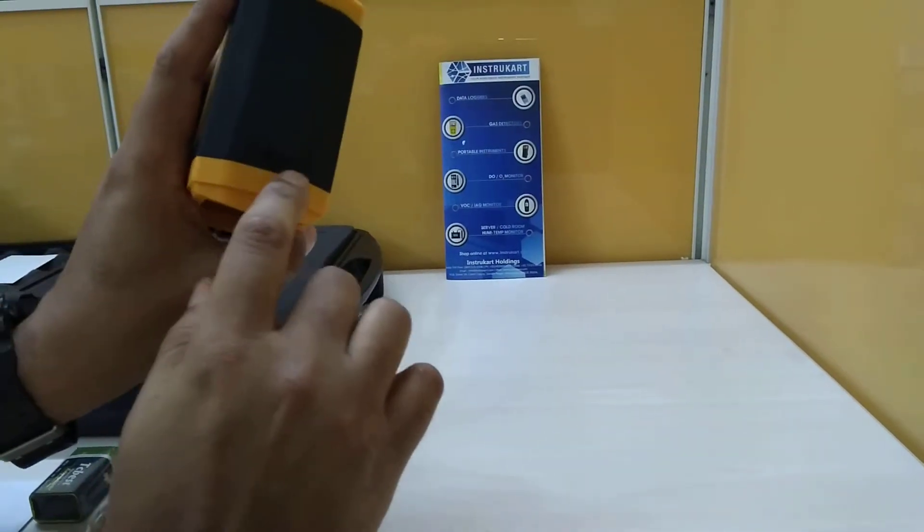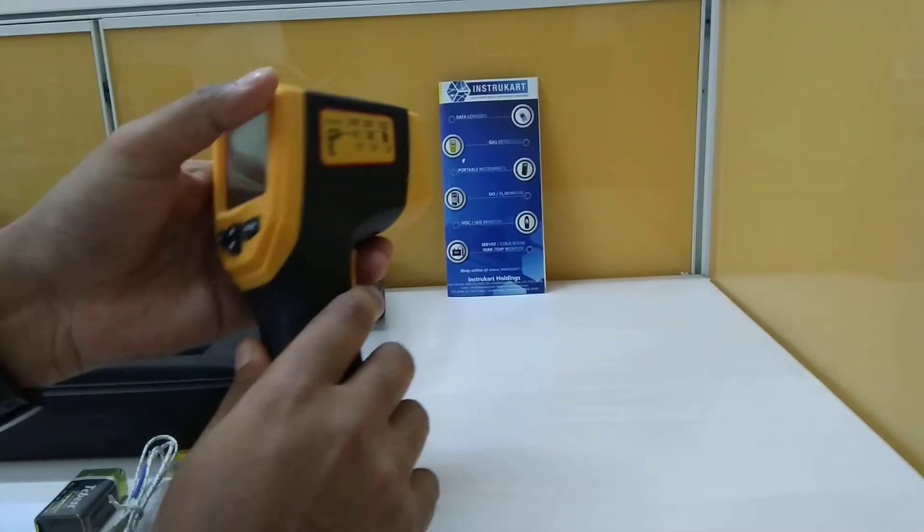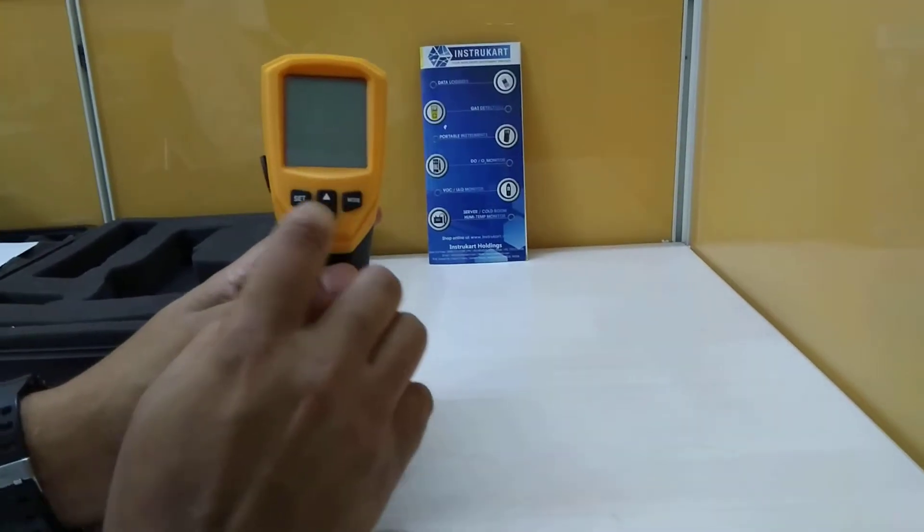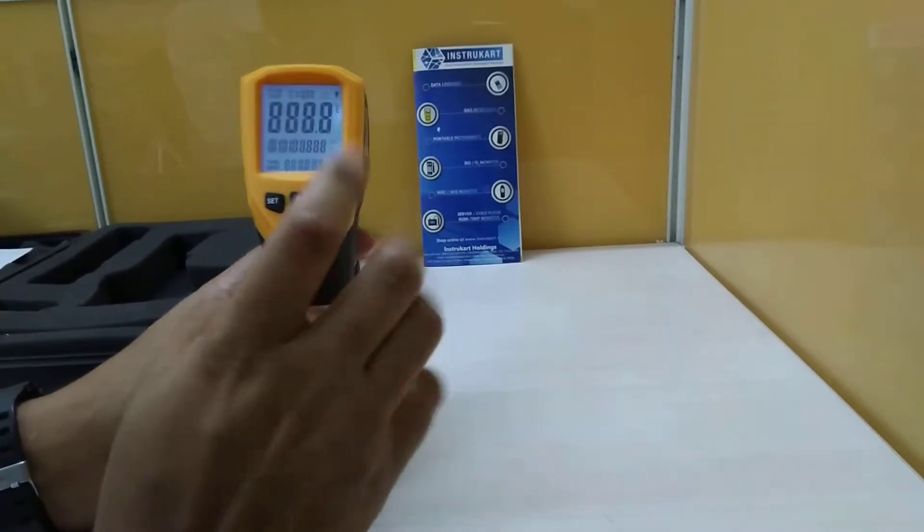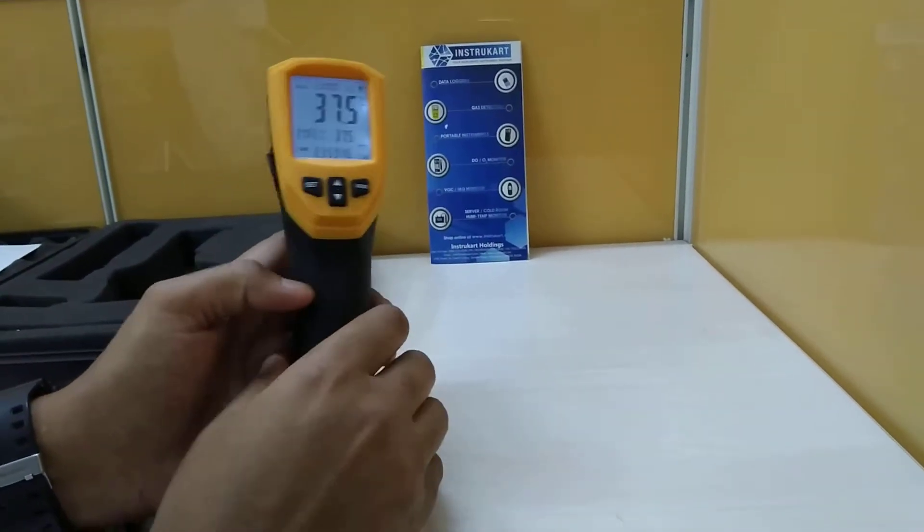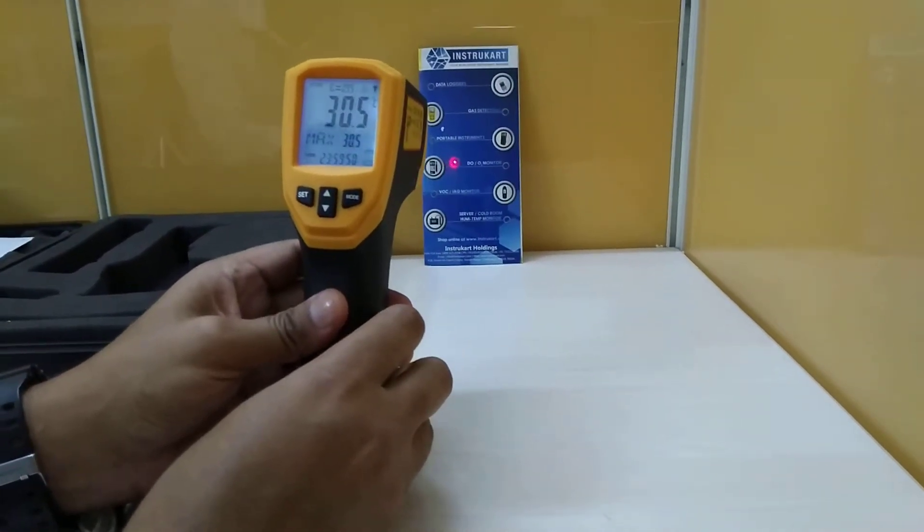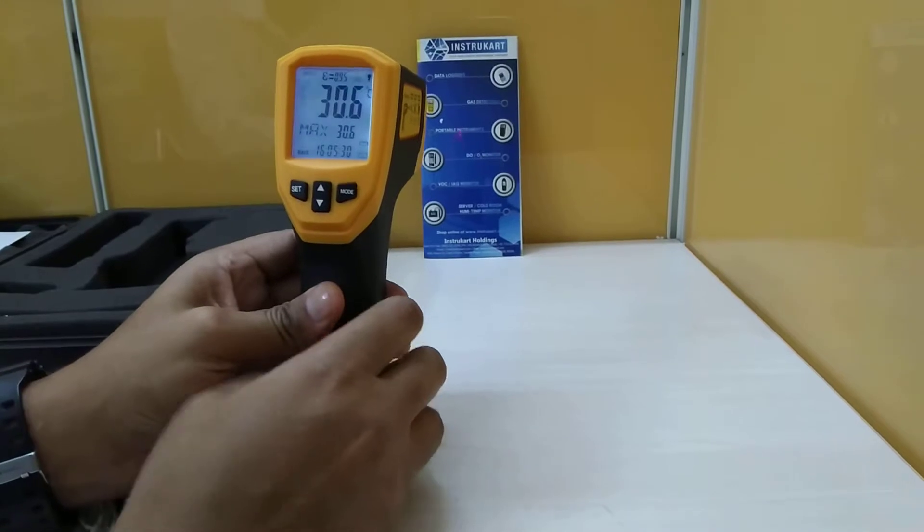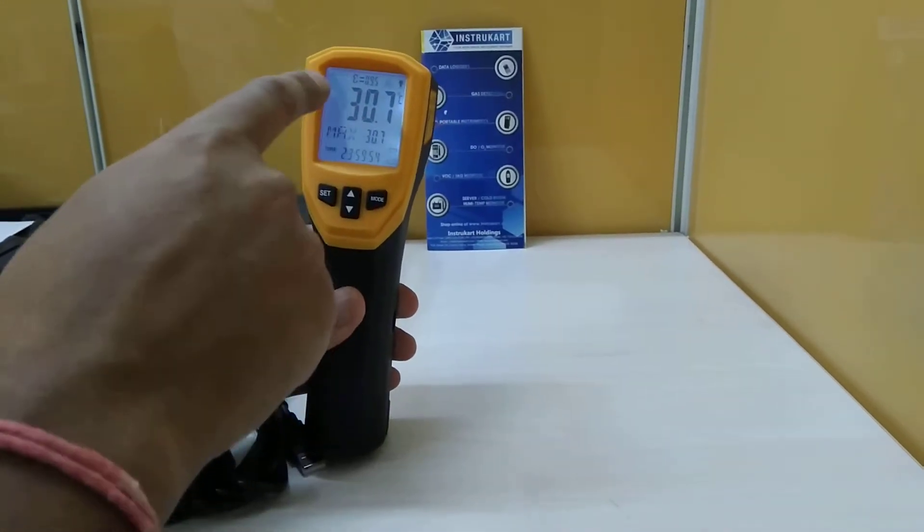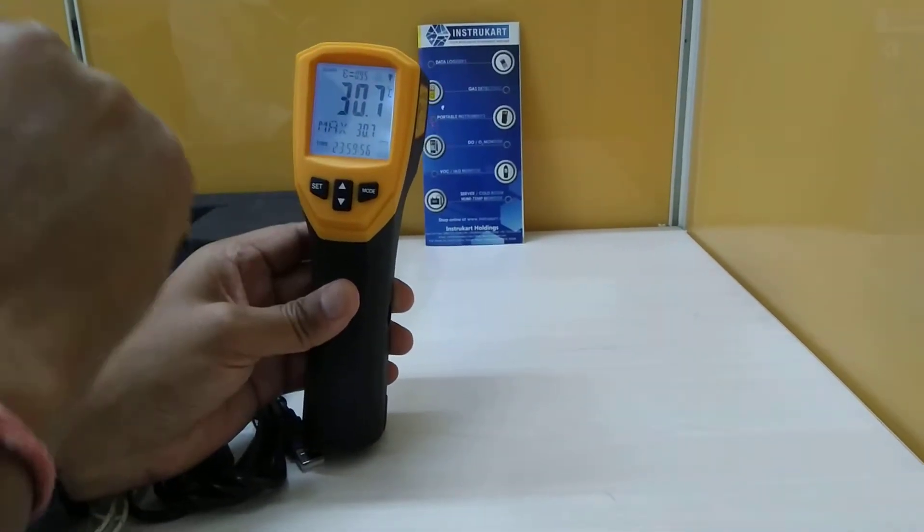This is a K-type interface, and these are the front key buttons for operating this IR gun. This is a trigger. When you pull the trigger, you can see the pointer and you can see the current temperature when the scan is being shown.